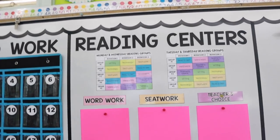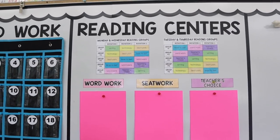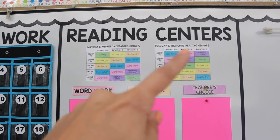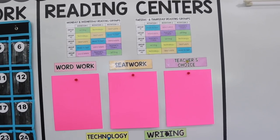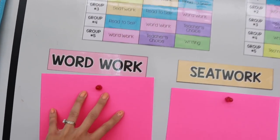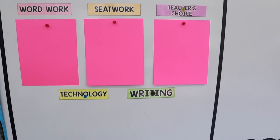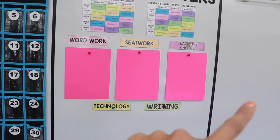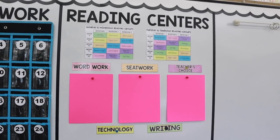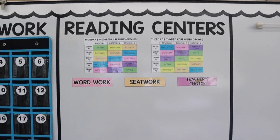My reading centers board is finished as well. I can make a whole video on how I'm running centers this year, but essentially these are the different rotations — we're going to do reading centers four days a week. These are the different centers: whatever the word work activity for the day is I'll post here, whatever the seat work is I'll post here, whatever my choice is I'll post here, whatever the writing prompt is I'll write here, and whatever app they're on I'll put here. I was just using magnets to place these as spacers.